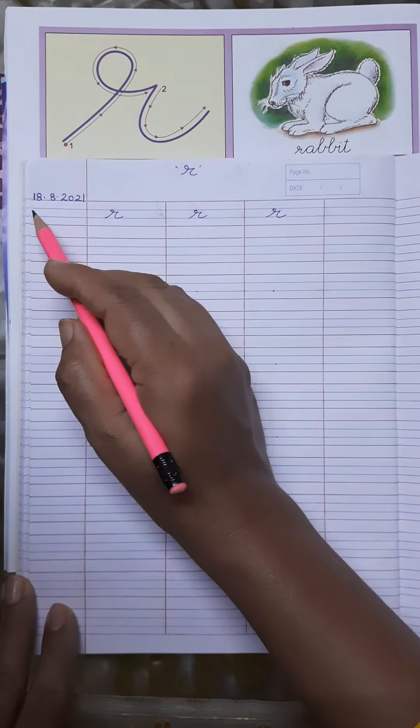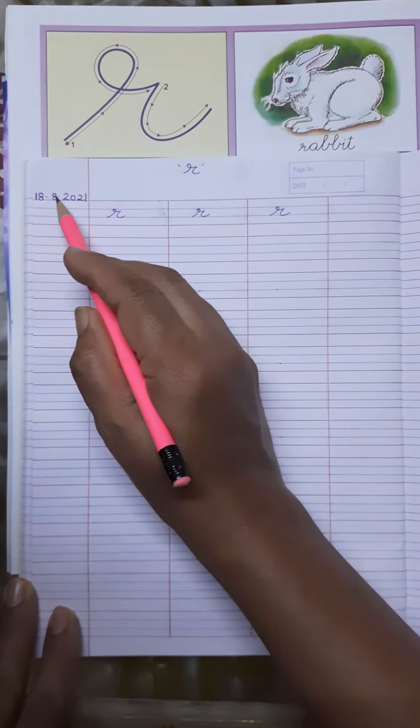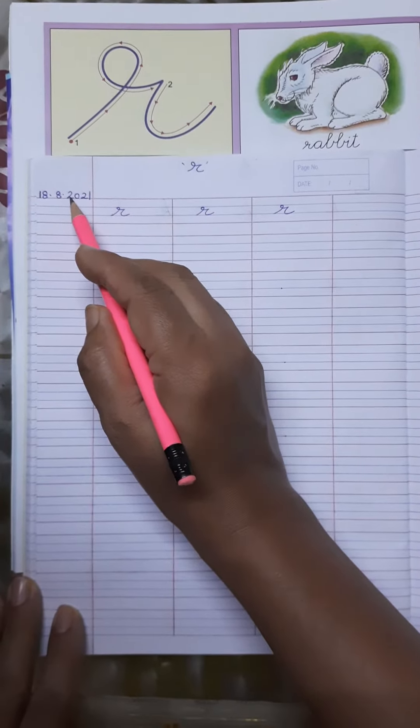First of all you will write today's date, that is 18.8.2021.